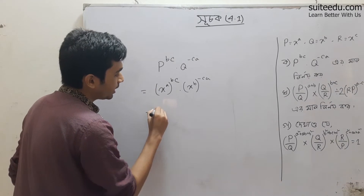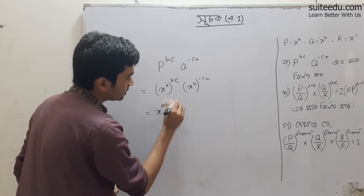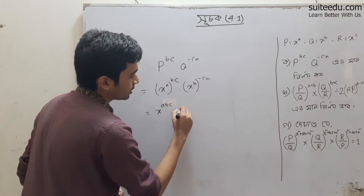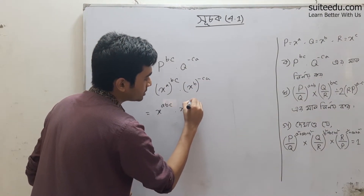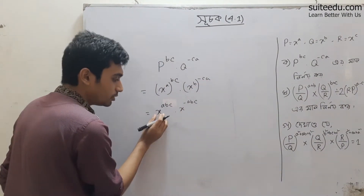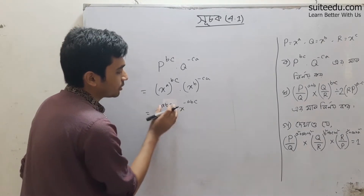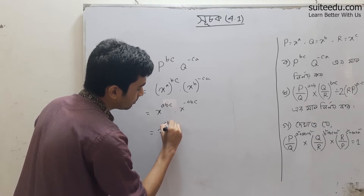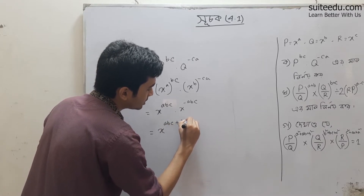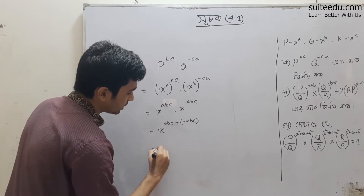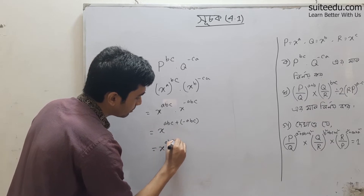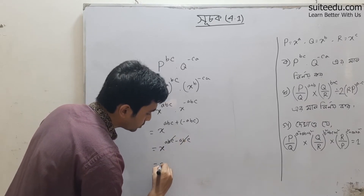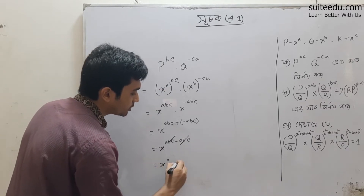We get x to the power ABC, and then x to the power minus ABC. So that gives us x to the power ABC minus ABC, which equals x to the power zero, and x to the power zero equals one.